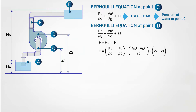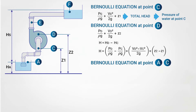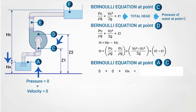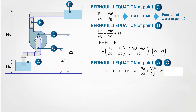It is possible to determine a relation between H and HS by applying the Bernoulli equation at points A and C. Since the water pressure at point A is zero, its velocity is zero, and the head is HA, this equals the head at C: PC/ρg plus VC²/2g plus Z1. Between point A and point C there are losses due to water entering the suction pipe and friction inside it, so the complete equation includes Z1 plus H_inlet plus HF1 (friction in the suction pipe).